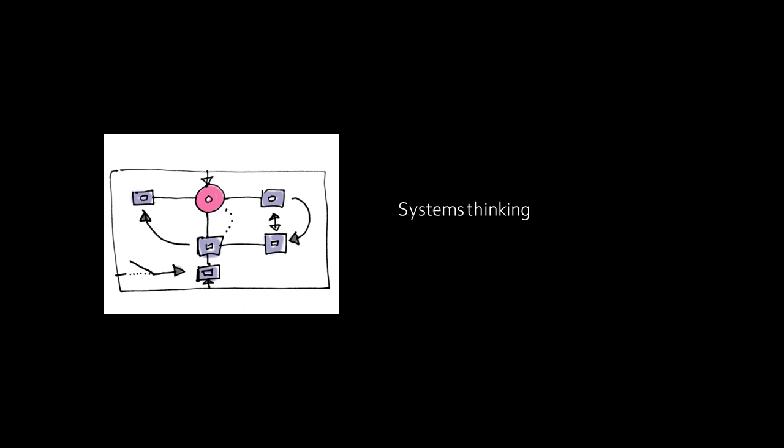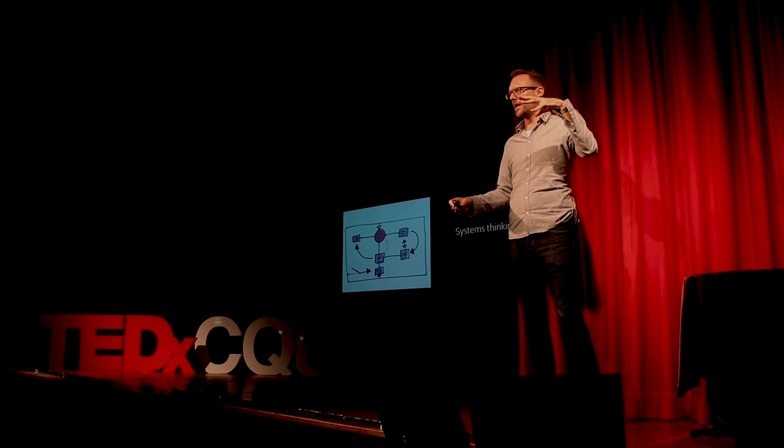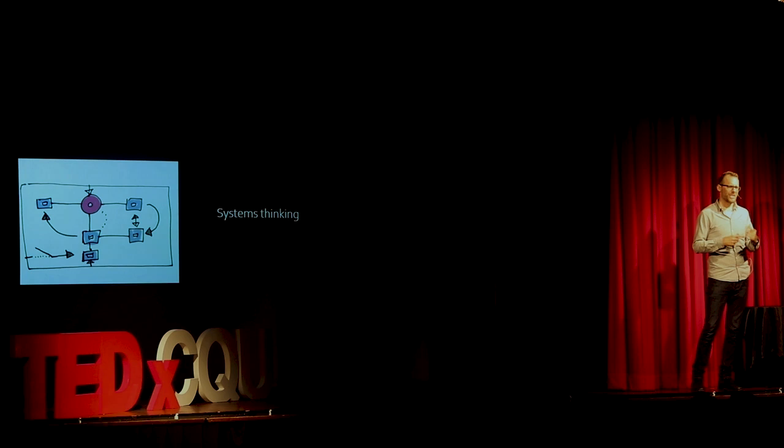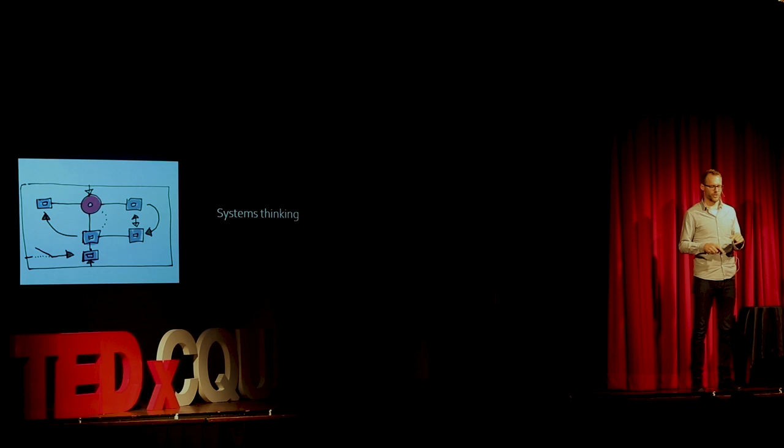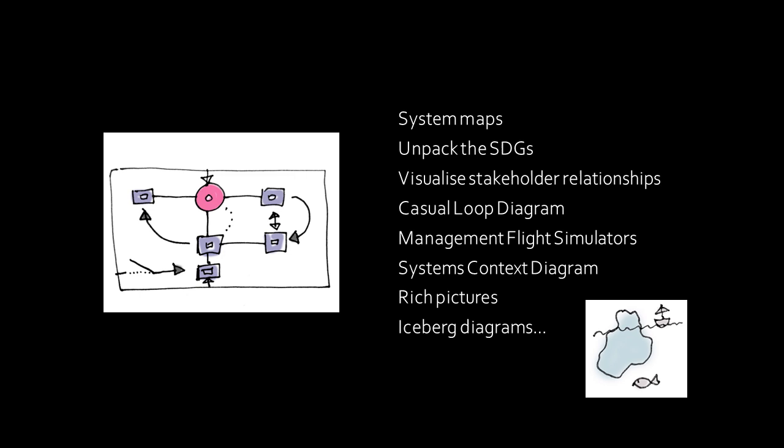Systems thinking takes a macro perspective and tries to understand the systemic forces that impact social challenges. It's happening in some disciplines, but it's not always focused on social issues. To understand social issues, our role in them, and the feedback loops that perpetuate systems, systems thinking is key. In a world that's interconnected, interdisciplinary, and complex, being perceptive toward systems is a skill every discipline should foster. Students may practice by mapping systems, unpacking the Sustainable Development Goals, or creating rich pictures or iceberg diagrams — anything that clarifies the complexities and connections within a system.